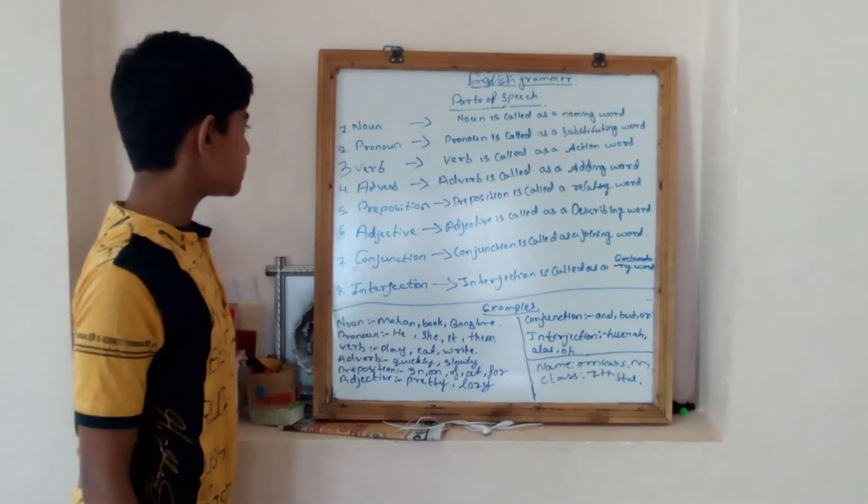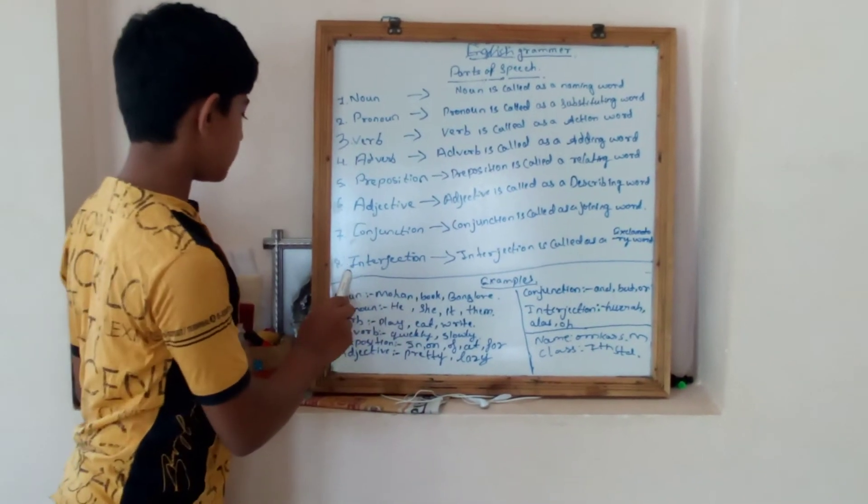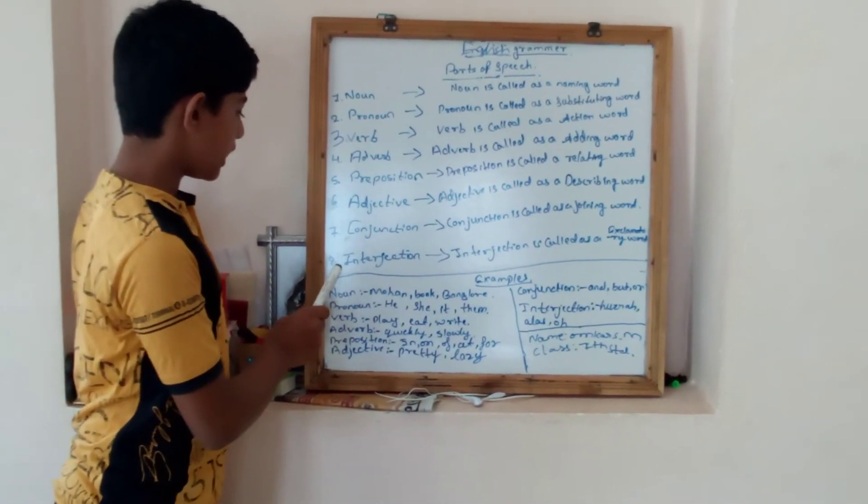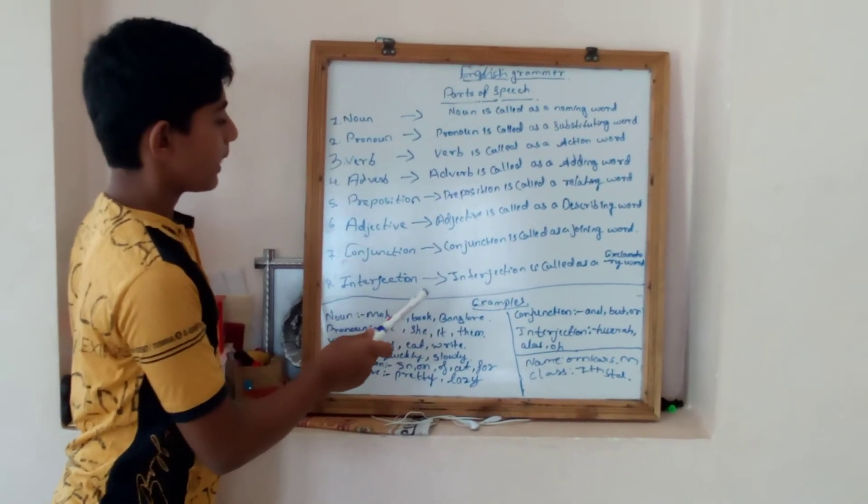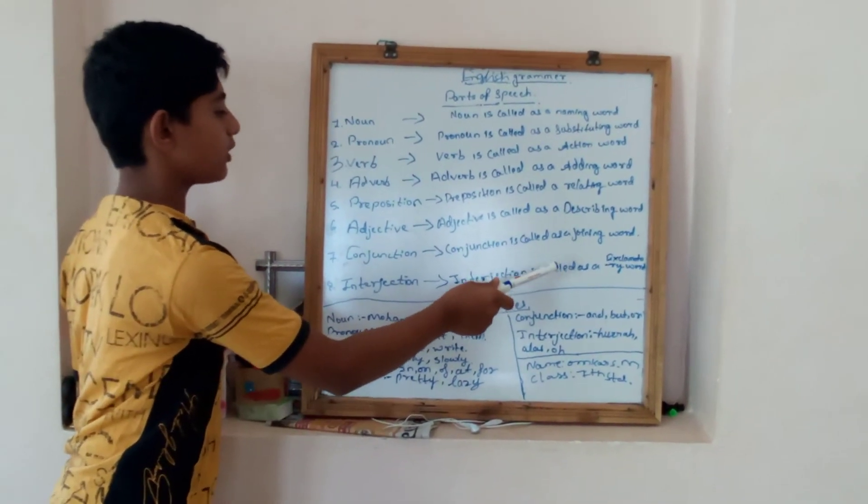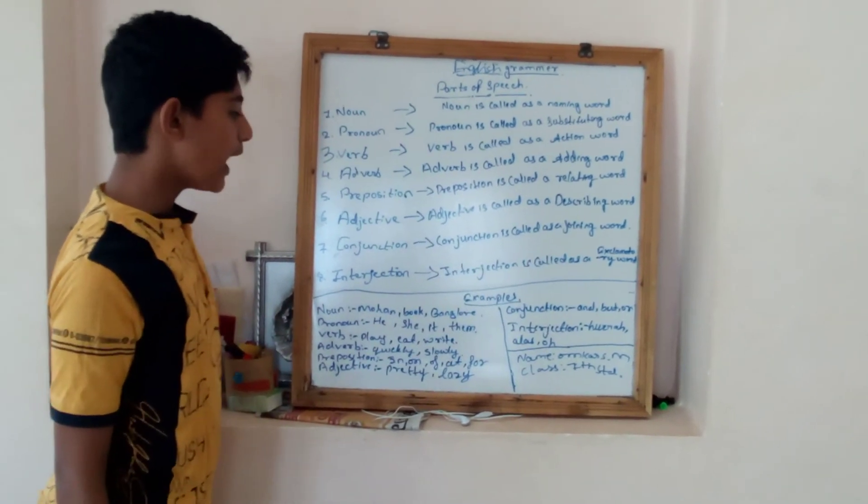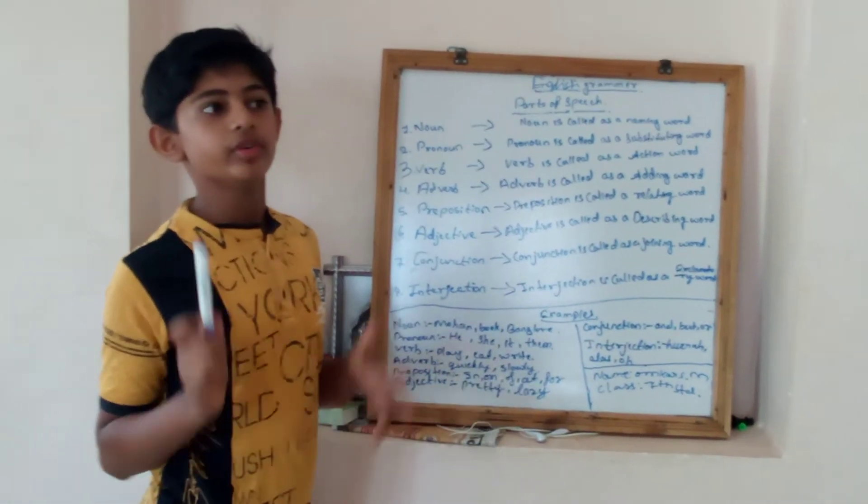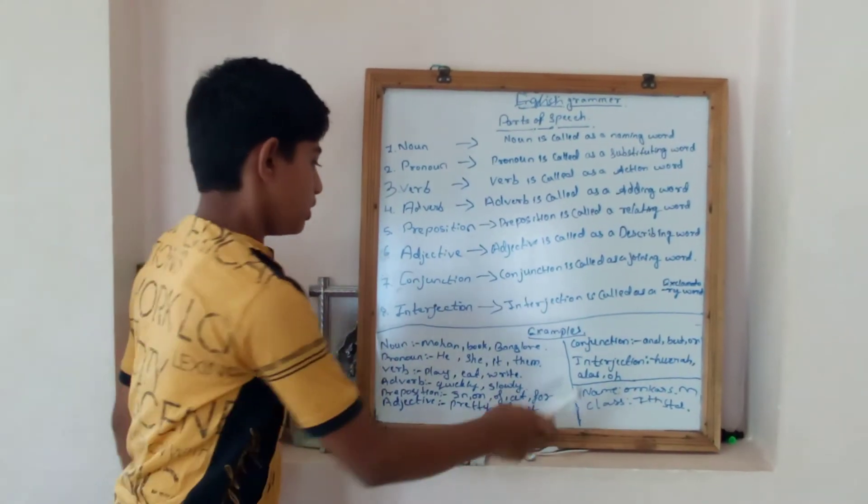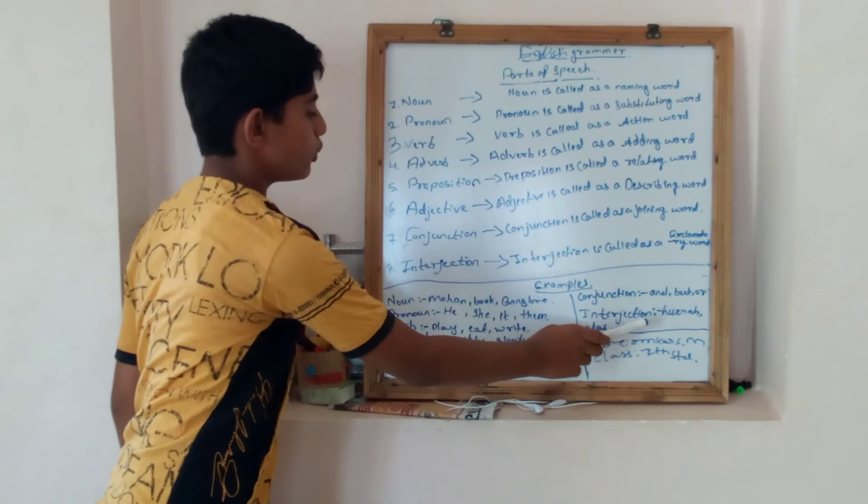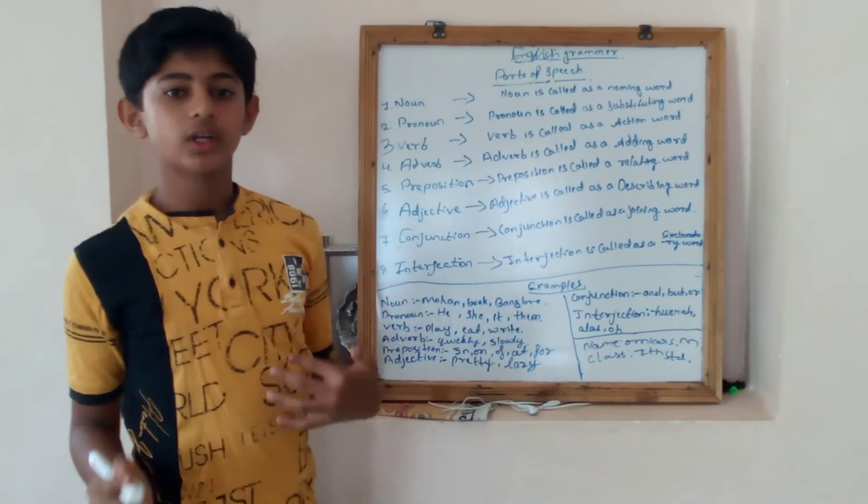Interjection. The last part of speech, the eighth part of speech, that is interjection. Interjection is called as the exclamatory word. Which word comes in our mind - hurrah, alas, and oh. What word does?